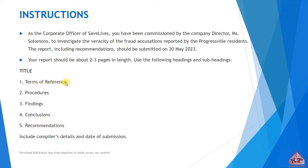Your terms of reference will be number one, followed by procedures as number two. Under procedures, you will have a list of steps that you will have taken to investigate the matter. So you might have 2.1, 2.2, or maybe up to 2.6. The minimum you should aim for is about four subheadings — so 2.1 up to 2.4 — but don't aim for anything less than that.